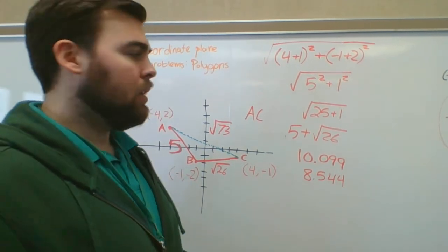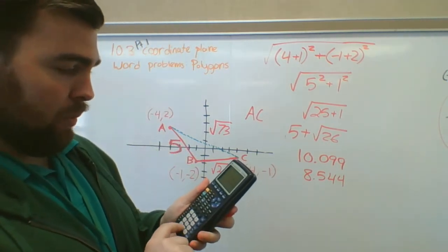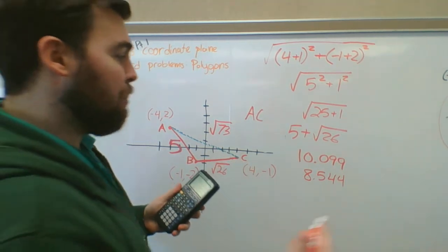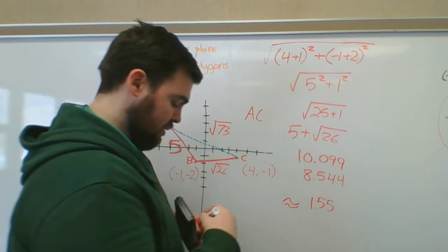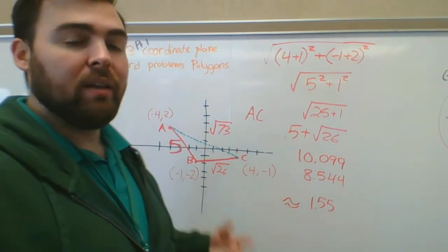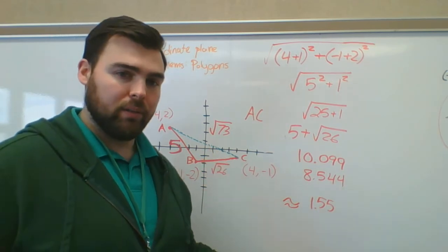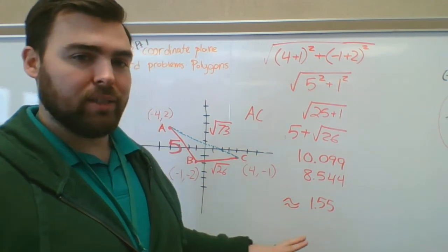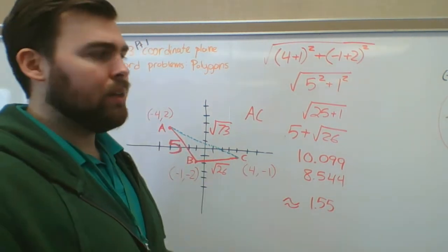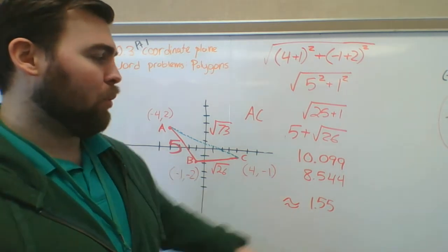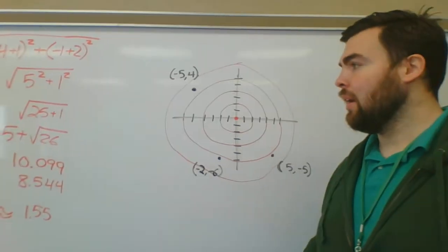To find how much shorter AC is, just subtract: 8.544 − 10.099 gives about 1.55. On Khan Academy, pay attention to what they ask you to round to — nearest hundredth, nearest tenth, or nearest whole number. The answer is about 1.55.